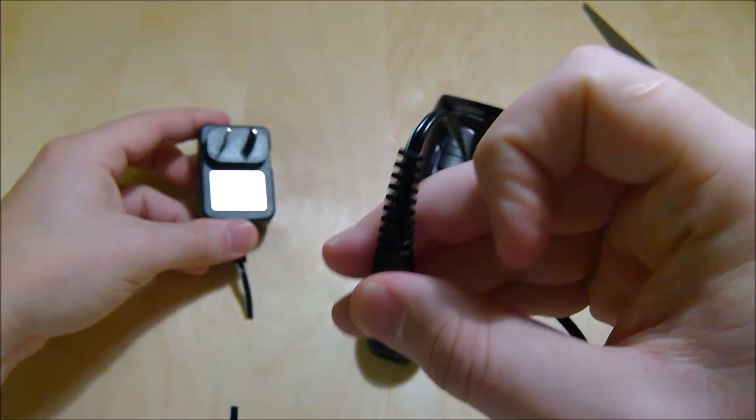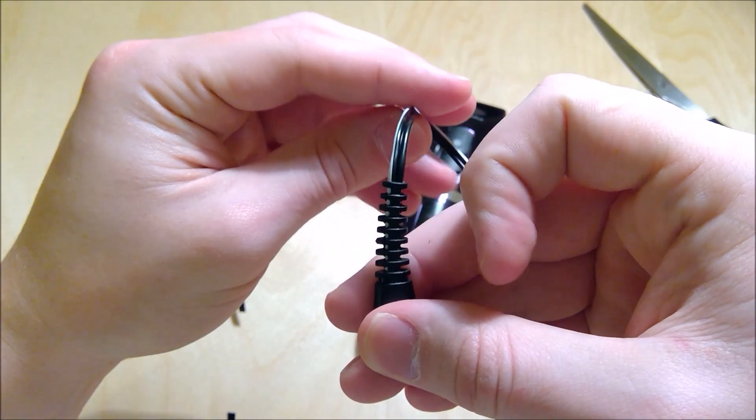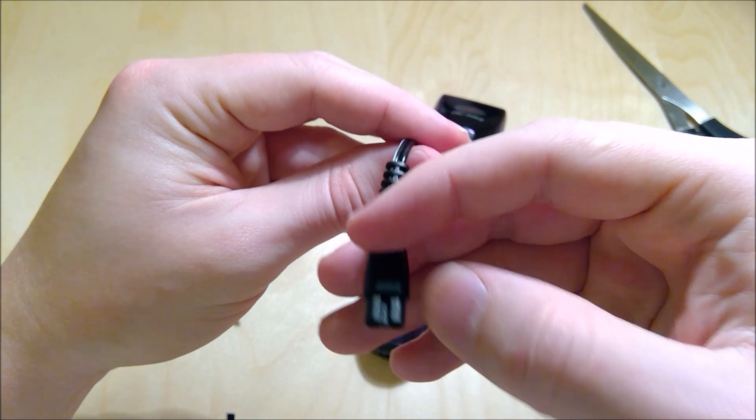Looking at the wires, this means that the one with the white stripe is plus and the black one is minus.